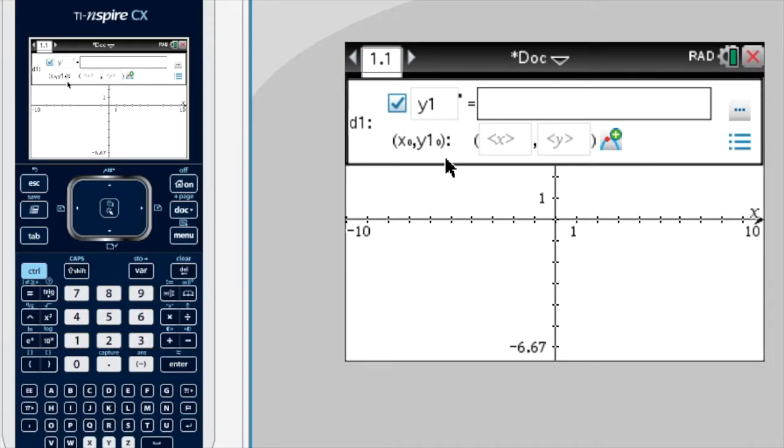Now notice here they've got y1 and then the dash here, which means the derivative of y1. So what that means is whenever we want to refer to y, we need to put in y1. They do that so that the next one would be y2, y3, just so you can do multiple differential equations if you need to.